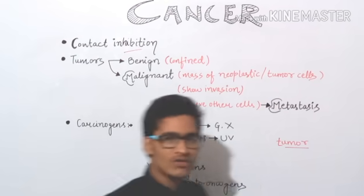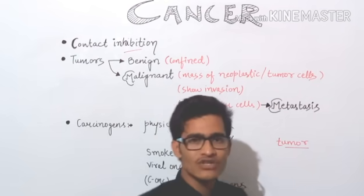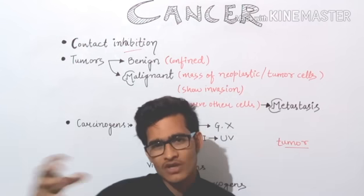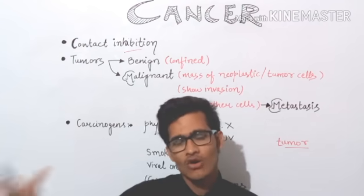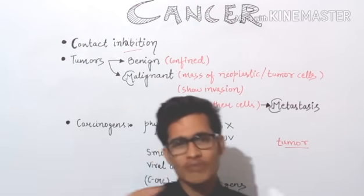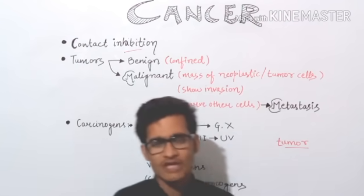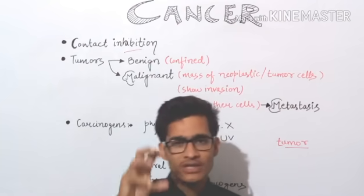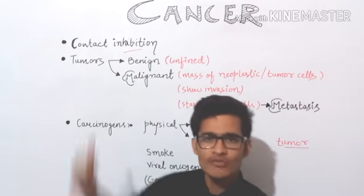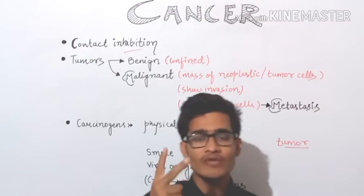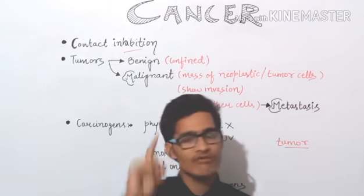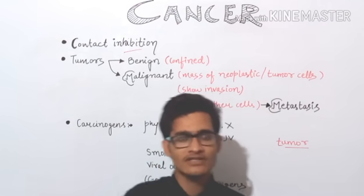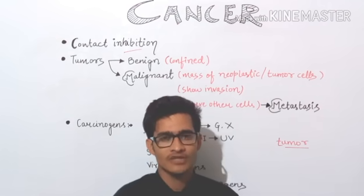The tumor we are talking about is the aggregation of cells. After division, millions of cells become aggregated and form a bunch — that particular bunch is known as a tumor. That tumor is of two major types, which are very important from an examination point of view, and the differences are asked in board examinations.